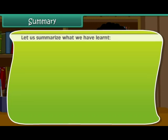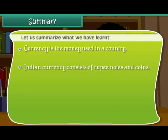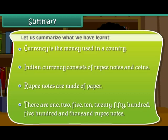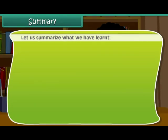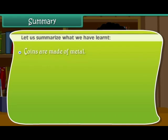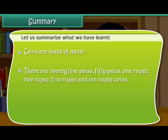Let us summarize what we have learnt. Currency is the money used in a country. Indian currency consists of rupee notes and coins. Rupee notes are made of paper. There are 1, 2, 5, 10, 20, 50, 100, 500 and 1000 rupee notes. Coins are made of metal. There are 25 paisa, 50 paisa, 1 rupee, 2 rupee, 5 rupee and 10 rupee coins. We use notes and coins in different combinations to make payments.